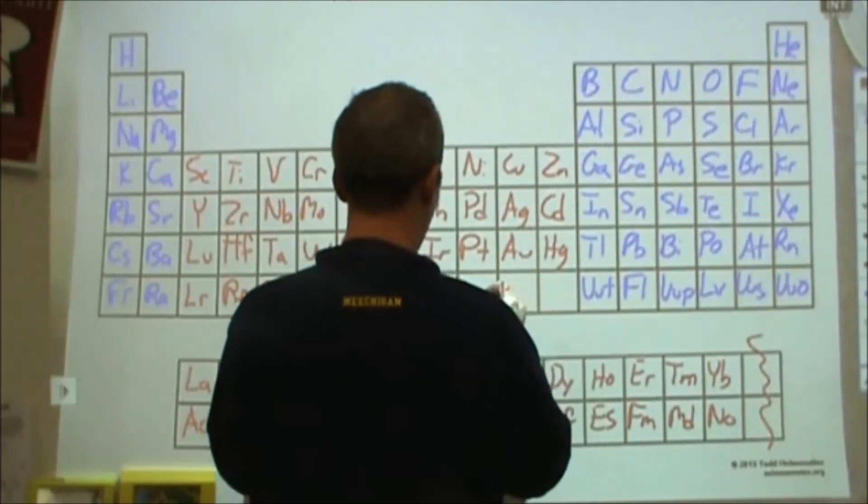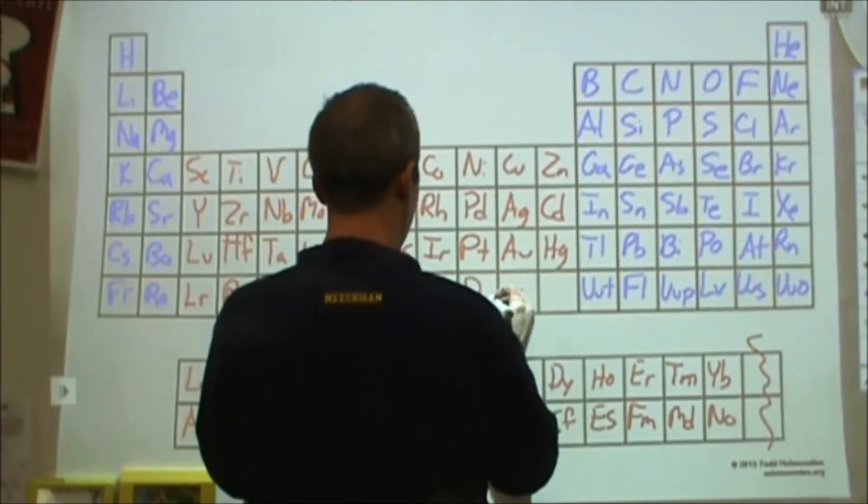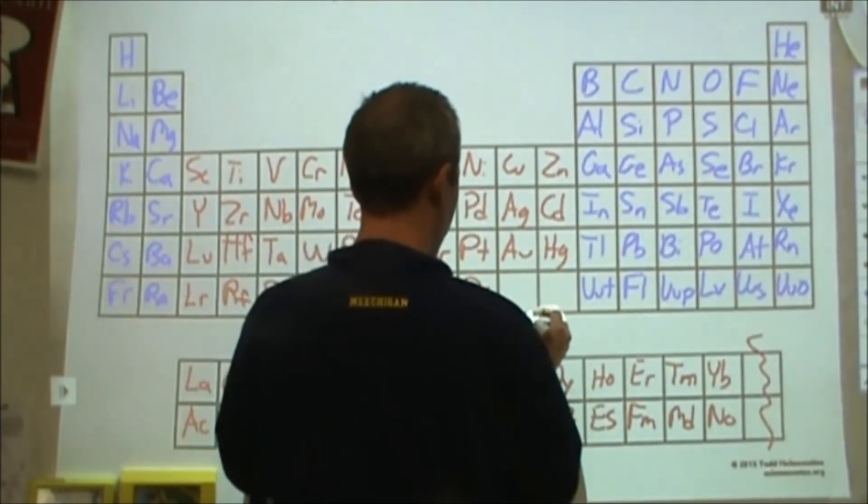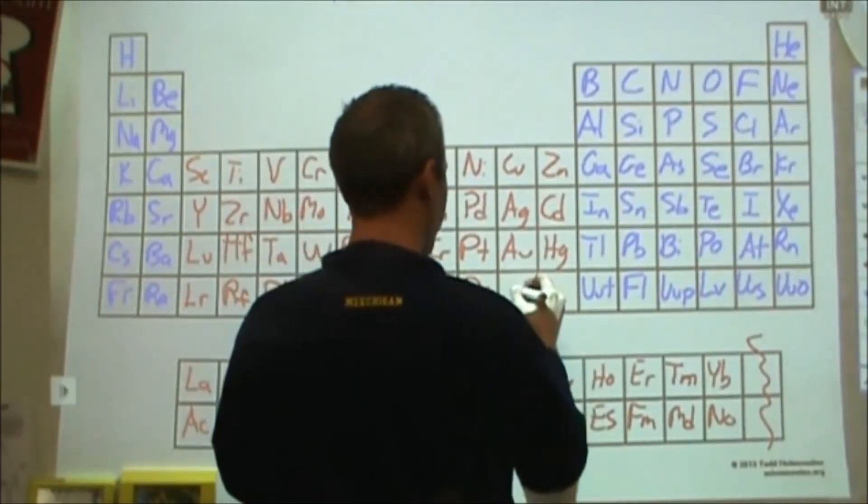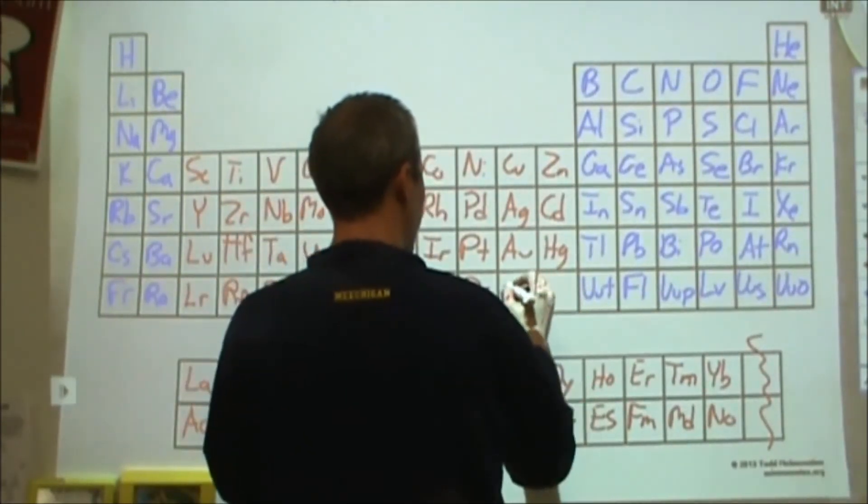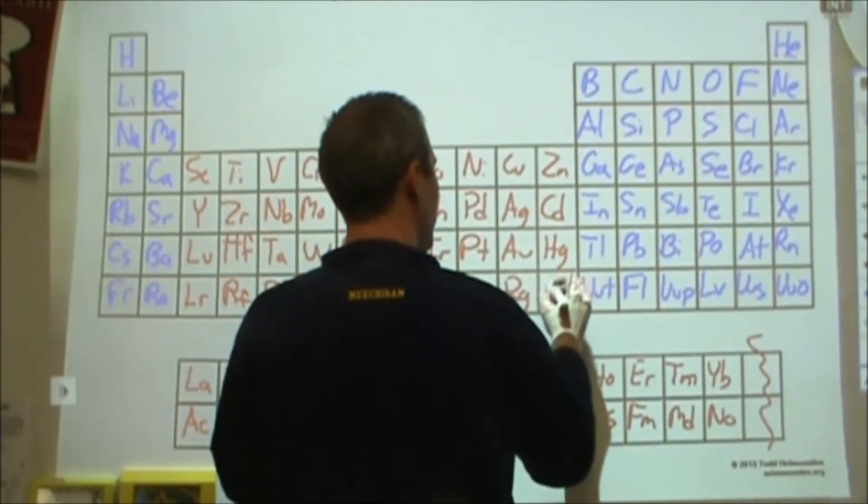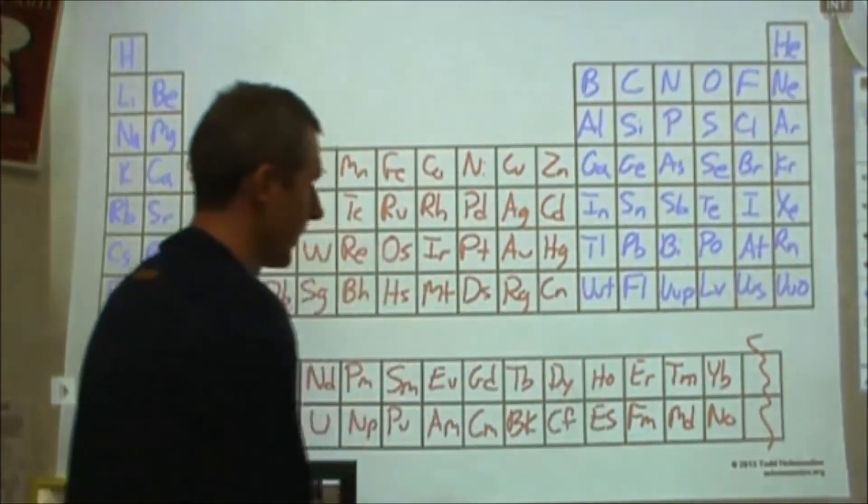And then let's see, 110 is darmstadium. And then we have roentgenium and copernicium. There we go. Correct table.